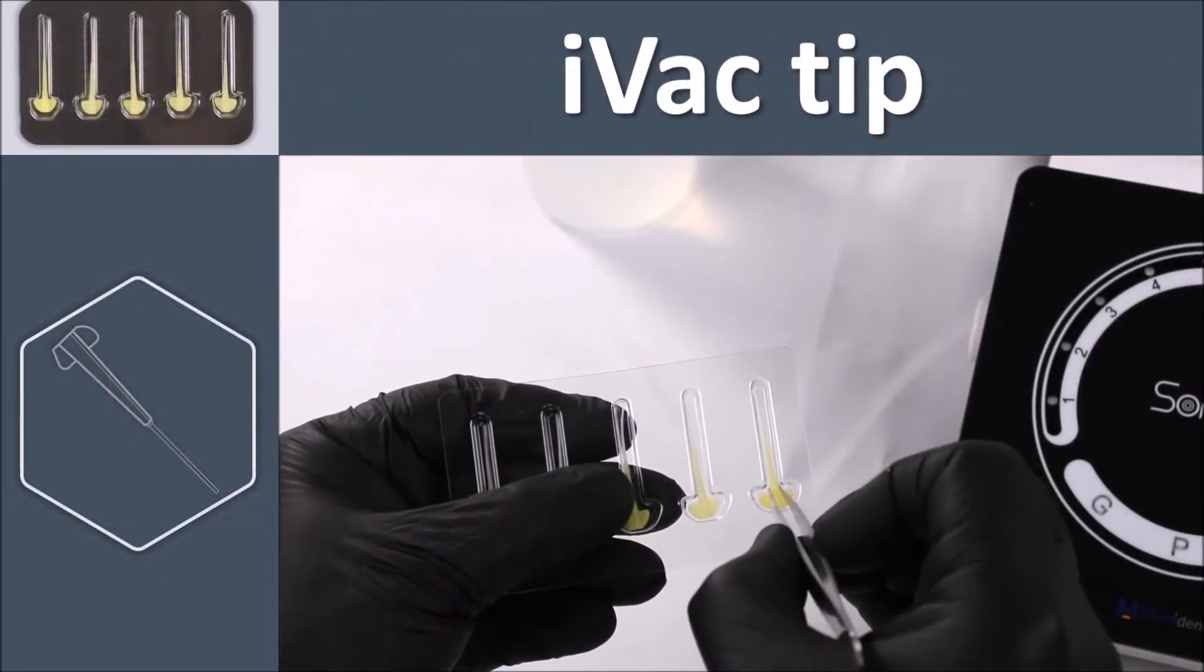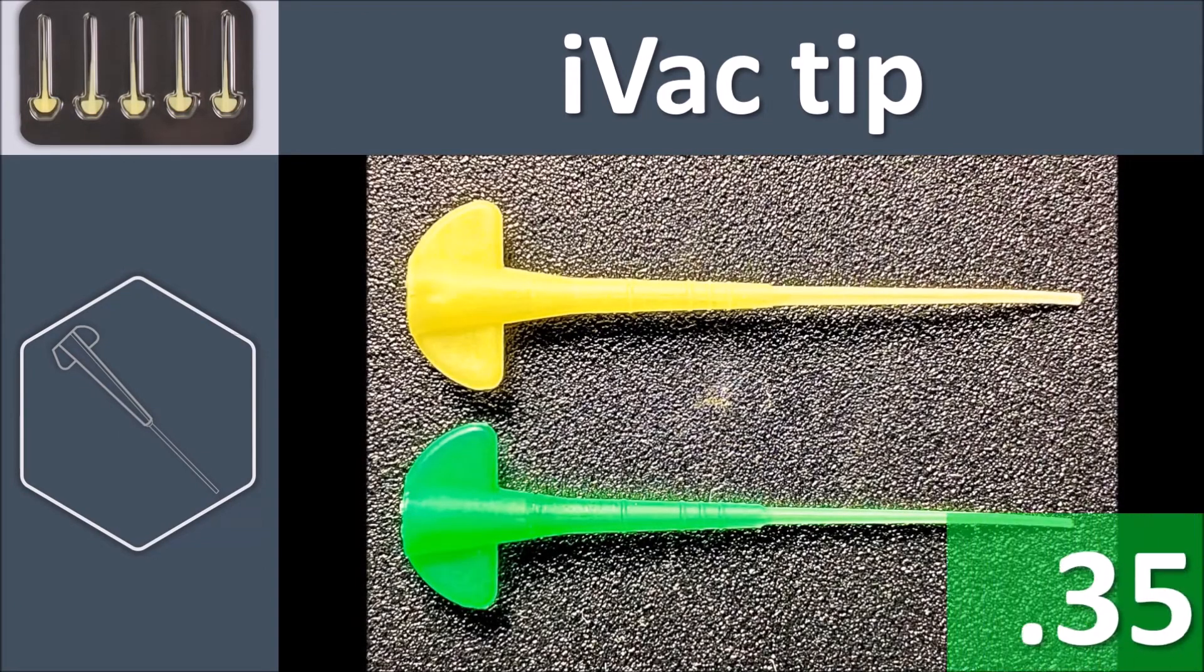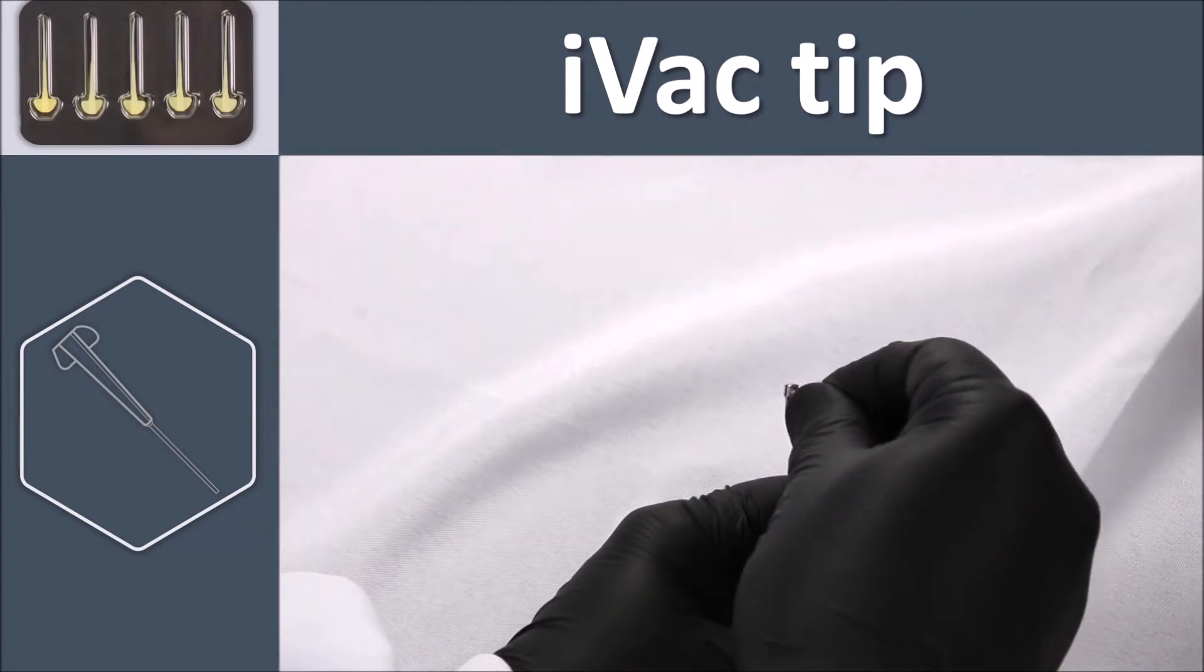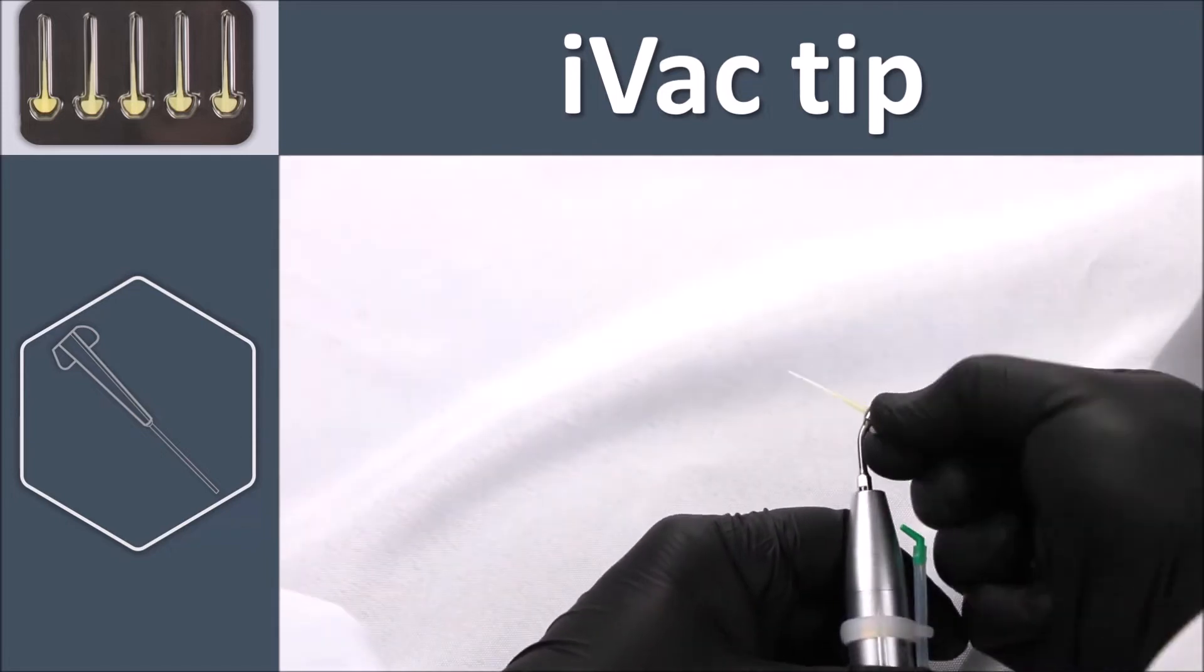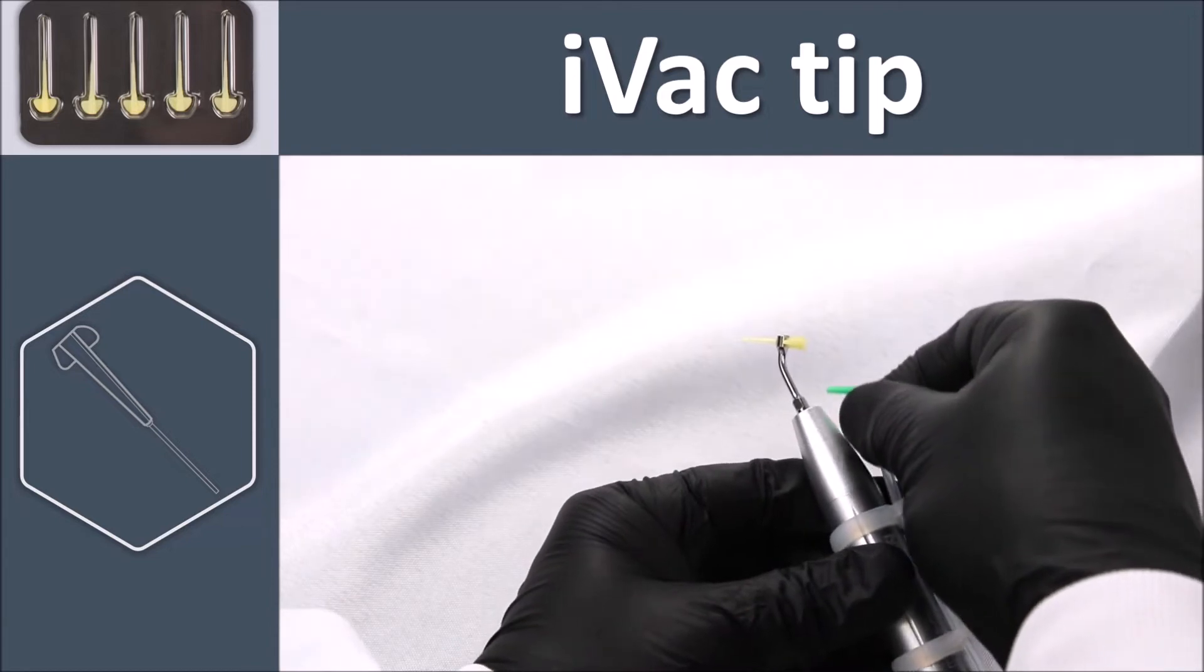Choose the iVac tip based on the final diameter preparation. There are two options: 0.35 and 0.50. The iVac tip is a self-screwing type of device. Insert the tip into the connector and with light pressure screw the tip all the way. After installing the tip, insert the elbow connector tightly to the iVac tip.